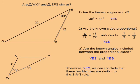Question 3 says, are the known angles included between the proportional sides? Yes, in both cases the 38 degree angle is located between the two known sides.